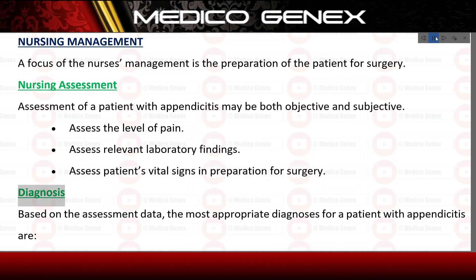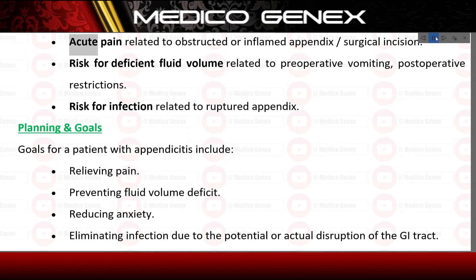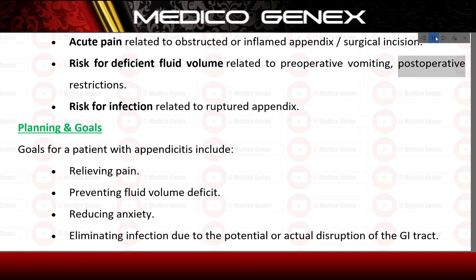Diagnosis. Based on the assessment data, the most appropriate nursing diagnoses for a patient with appendicitis are: acute pain related to obstructed or inflamed appendix and surgical incision; risk for deficient fluid volume related to preoperative vomiting and postoperative restrictions; and risk for infection related to ruptured appendix.